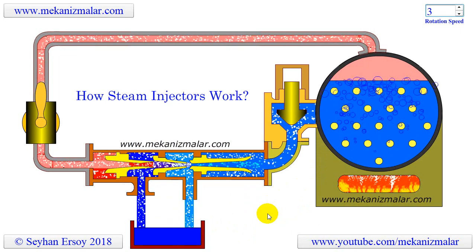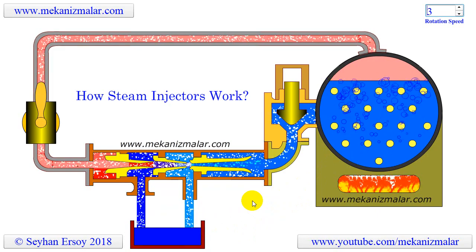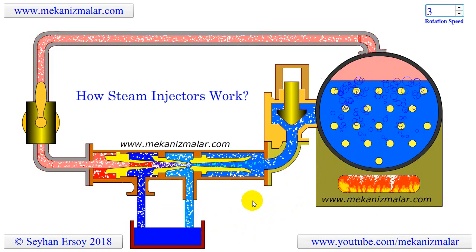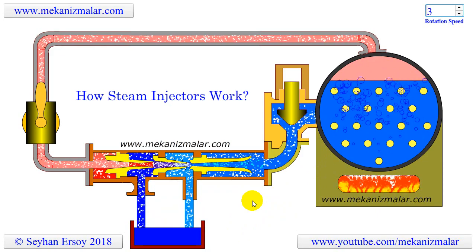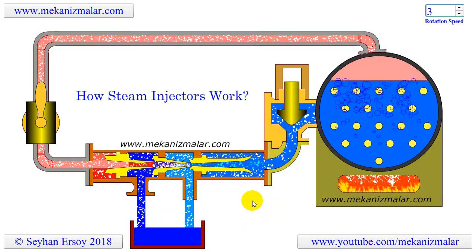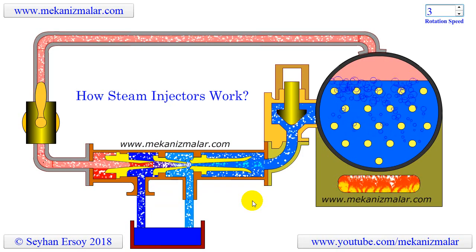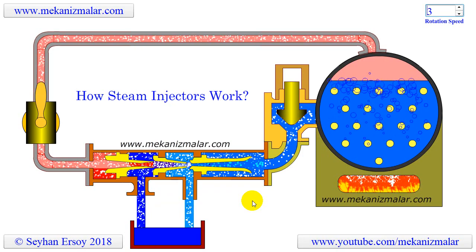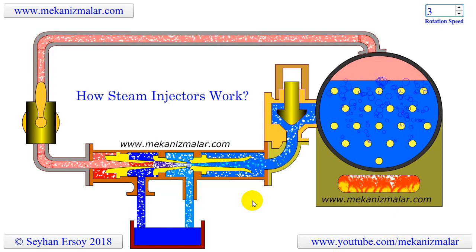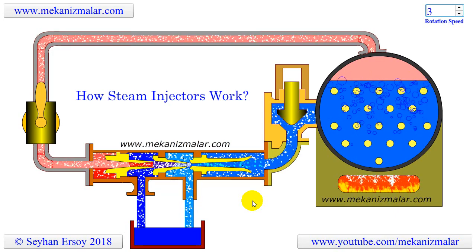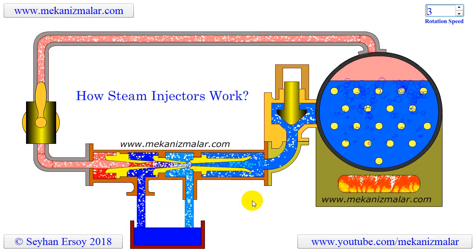The first problem with this design is that the steam used to operate the pump is discharged to the atmosphere, which reduces the overall efficiency of the locomotive. The second problem is that we are pumping cold water into the boiler, which reduces the boiler temperature. The third but not last problem is that you have to maintain a pump which has many moving parts.